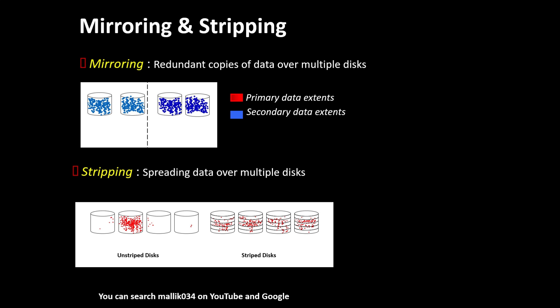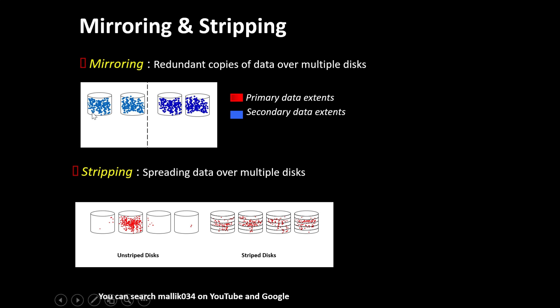You can choose high mirroring, normal redundancy, or external redundancy. External redundancy means no ASM mirroring — only one copy of data exists and a third-party tool handles the backup. Normal redundancy means two-way mirroring — keeping two copies. High redundancy means three copies: one primary and two duplicates. Keeping three copies of your data is high redundancy.